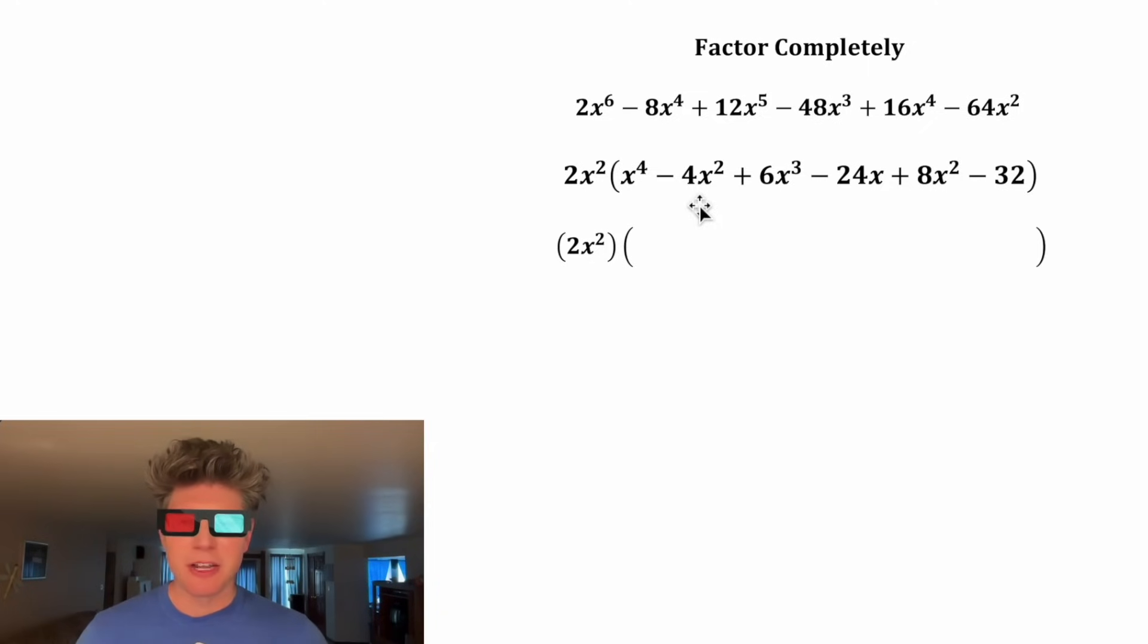And then for the stuff inside here, let's do factor by grouping with three separate groups. We have this group in red, this group in blue, and this group in green. There might be a better way to do it. You might be better off grouping these and these, but I can see right now this way will work, so let's do this.